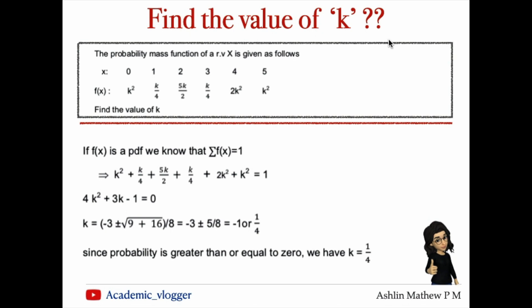we get k² + k/4 + 5k/2 + k/4 + 2k² + k² = 1. On solving, we get 4k² + 12k/4 - 1 = 0.